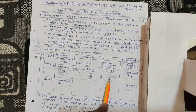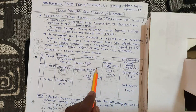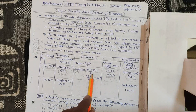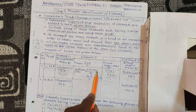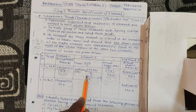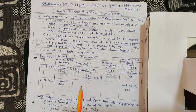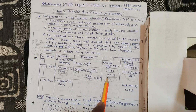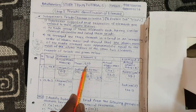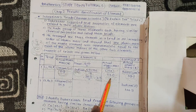Let's see — sodium ka mass 23 hai. Lithium ka mass aur potassium ka mass dono ka total lete hain aur divide by 2 karte hain. So (6.9 + 39.1) = 46, divide by 2 = 23. Yah 23 sodium ke mass ke barabar hai — iska matlab lithium and potassium ke mass ka mean bhi 23 hai aur sodium ka mass bhi 23 hai. This confirms the Döbereiner Triad.